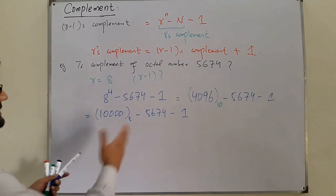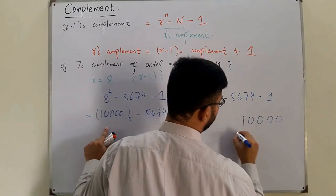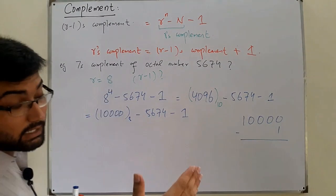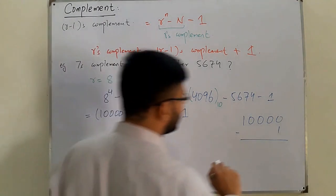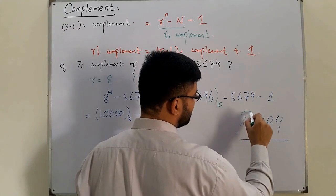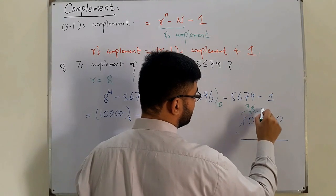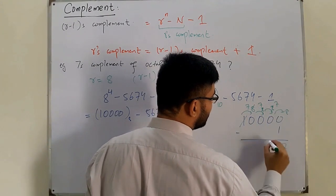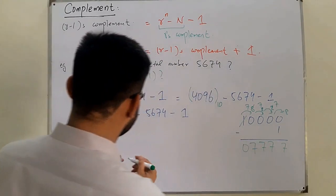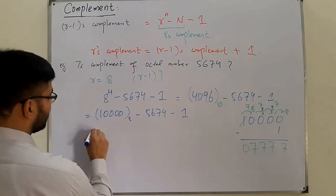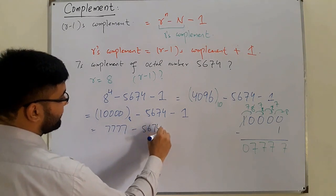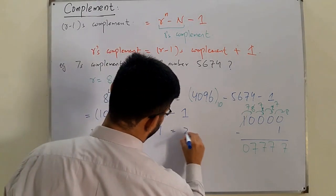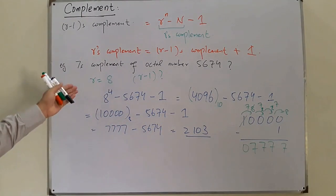First, let's subtract 1 from 10000 in base 8. Since the borrow in base 8 is 8, we get 7777. Now we subtract 5674 from 7777: 7777 minus 5674 equals 2103. So the 7's complement — the R-minus-1's complement — of octal 5674 is 2103.